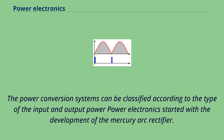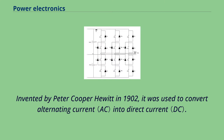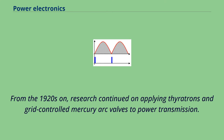The power conversion systems can be classified according to the type of input and output power. Power electronics started with the development of the mercury arc rectifier, invented by Peter Cooper Hewitt in 1902. It was used to convert alternating current into direct current. From the 1920s on, research continued on applying thyratrons and grid-controlled mercury arc valves to power transmission.